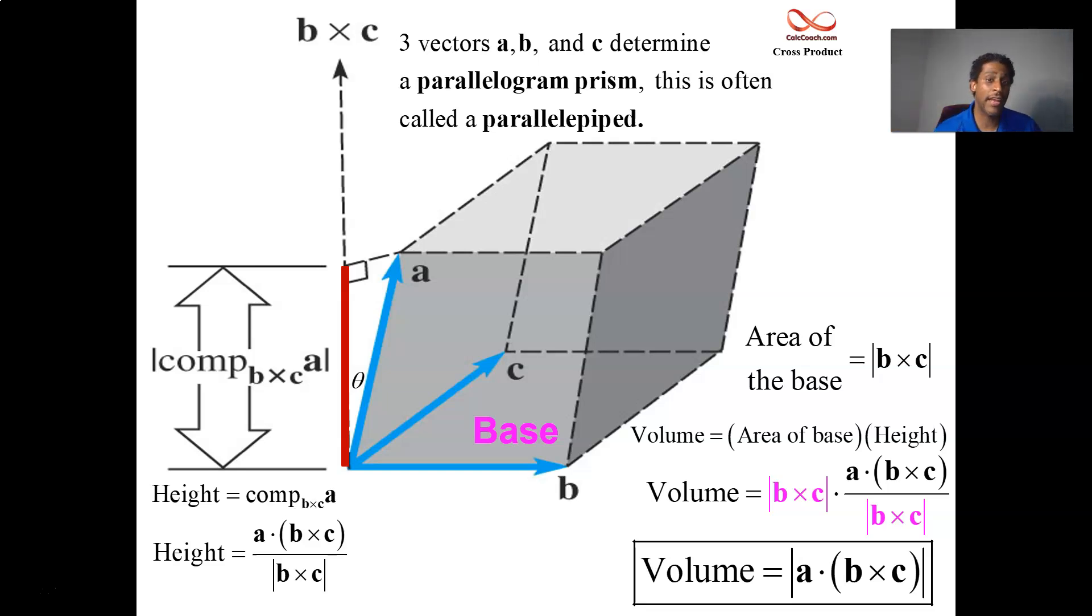Officially, the name is a parallelepiped, but I like to call it a parallelogram prism. So you could actually do the calculation with finding the cross product and then dotting with the third vector. It turns out that the order doesn't matter because you can use the bottom as your base or the front as your base or the left side as your base. And so the order in which you do the three won't matter.